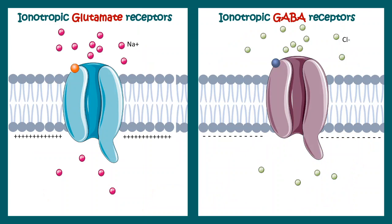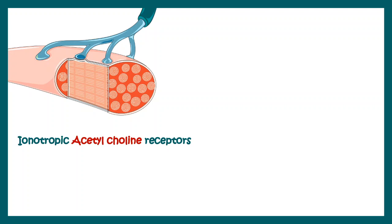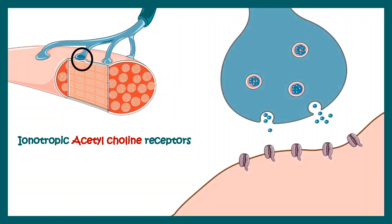Ionotropic glutamate receptors are pretty common. They are generally ligand-gated sodium channels, so they allow sodium ions to come in. It's important to notice that there are ionotropic GABA receptors as well, which are ligand-gated chloride channels. These lead to an intrusion of chloride or negative ions inside the neurons and lead to an inactivation of these neurons. Ionotropic acetylcholine receptors are also very common in the neuromuscular junction. Zooming into a neuromuscular junction, we can see nicotinic acetylcholine receptors, which upon binding to acetylcholine allow influx of cations into the muscle, thereby depolarizing the muscle.